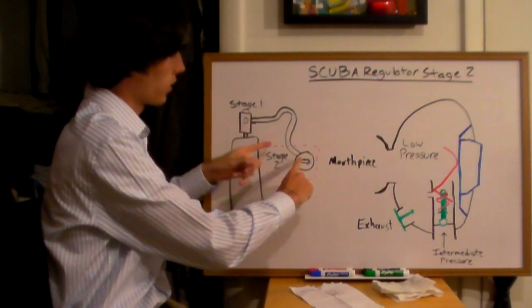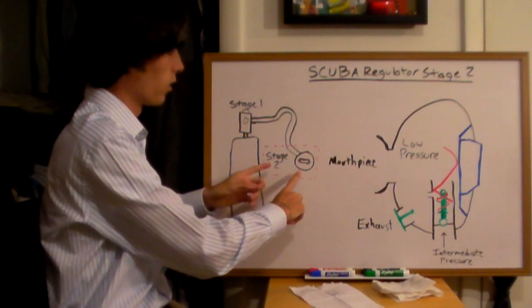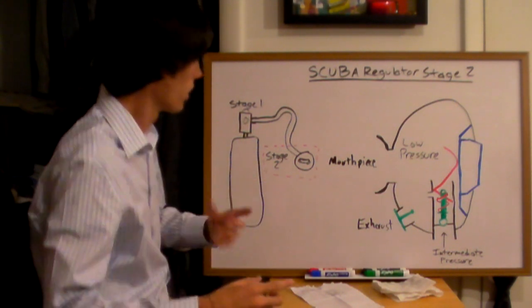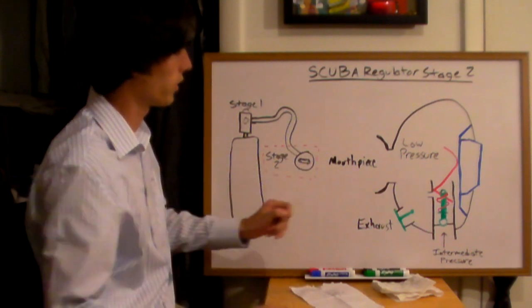That is then connected to your stage 2 regulator, which will reduce the intermediate pressure. And this is going to be the actual mouthpiece that you breathe into.